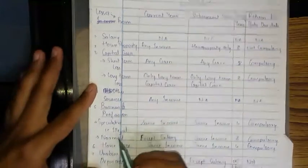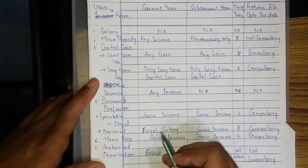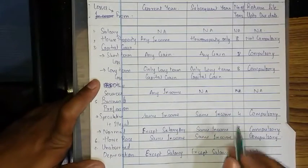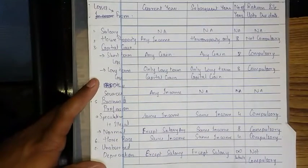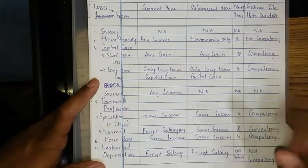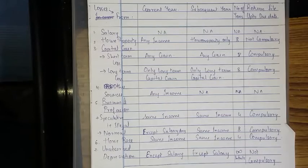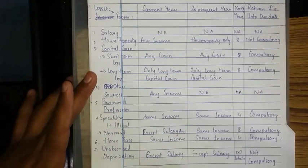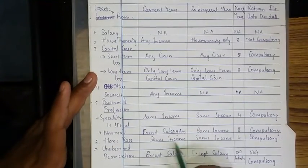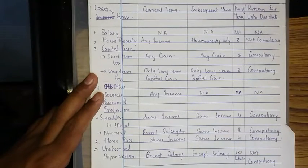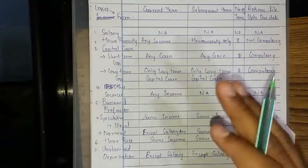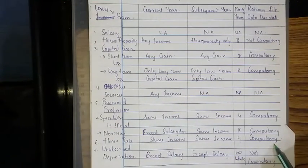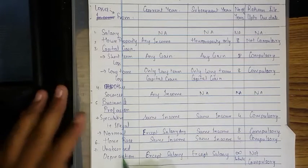For normal business and profession losses — any income except salary can be used to set off the loss in the current year. In the subsequent year, the losses will be deducted only from the same business/profession income, for 8 years, and return filing up to the due date is compulsory. For horse race losses — horse race is also an illegal source of income. Losses from horse race will be set off from horse race income only, for 4 years, and return filing up to the due date is compulsory.